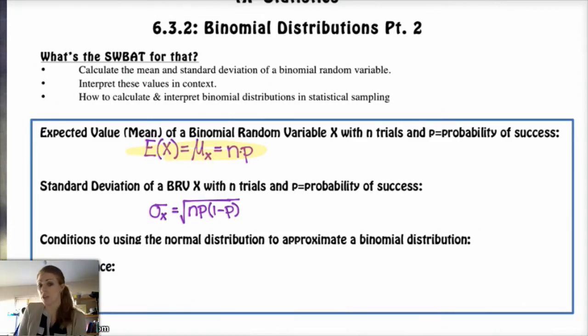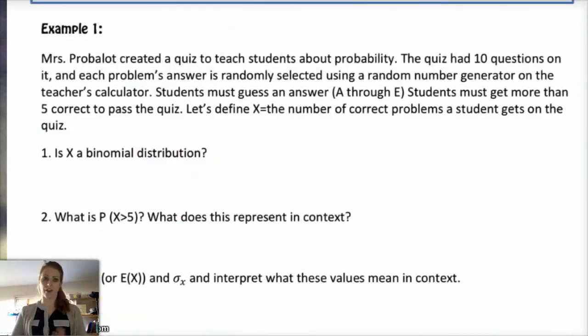And if you're curious about the standard deviation, where that comes from, there's a proof in the book on page 391. And if you're curious about where that comes from, great, you can go take a look at it. But more importantly, you're going to need to be able to use it and interpret it and use it in appropriate situations. As far as our conditions, this next section here, I'm not going to go over that until we get to the normal approximation of the binomial distribution. So let's try our first example.